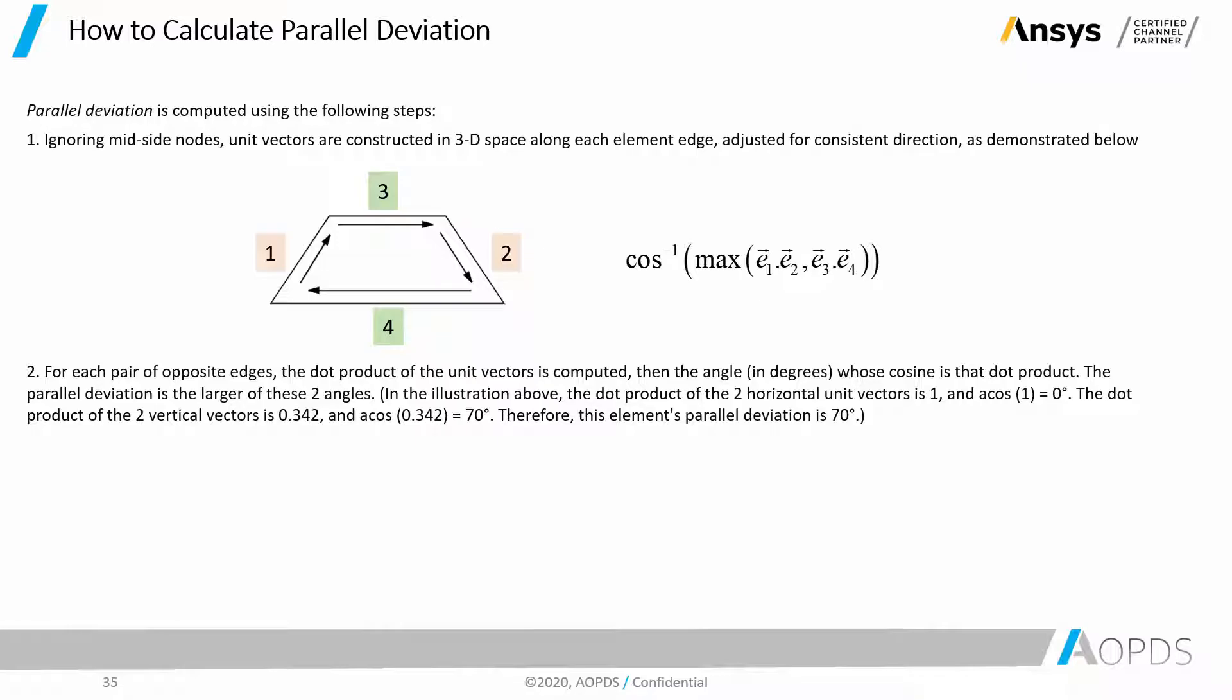and the arccosine of 1 is 0. The dot product of the two vertical vectors is 0.342, representing 70 degrees. Therefore, this element's parallel deviation is 70. The best possible deviation for a flat rectangle, as we talked before, is 0.